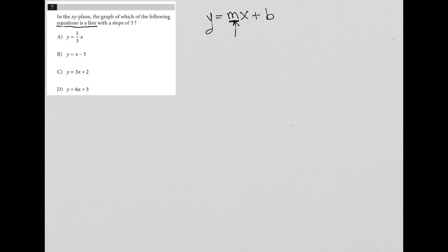So in this equation, the M portion here, the term that's right in front of the X, that is the slope. And the B portion is the Y intercept.